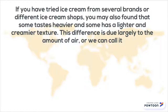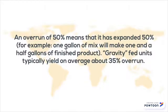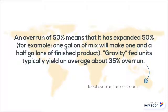If you have tried ice cream from several brands or different ice cream shops, you may have found that some taste heavier and some have a lighter taste and creamier texture. This difference is due largely to the amount of air, or what we call overrun. An overrun of 50% means that it has expanded 50% — for example, one gallon of mix will make one and a half gallons of finished product. Soft serve typically gives on average about 35% overrun, which is considered ideal.